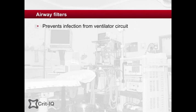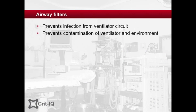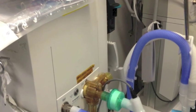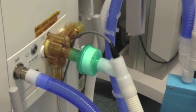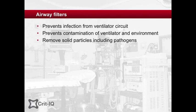The potential for ventilator-associated pneumonia to be transmitted to the patient via the ventilator circuit has led to the development of bacterial and viral filters. These disposable filters have also been used to prevent contamination of the ventilator and of the surrounding environment through the gas of the return limb in the circuit. If used correctly, many filter manufacturers quote rates of removal of more than 99% of pathogens. Filters contain material that effectively removes solid particles such as pathogens while allowing the relatively unimpeded flow of gas.